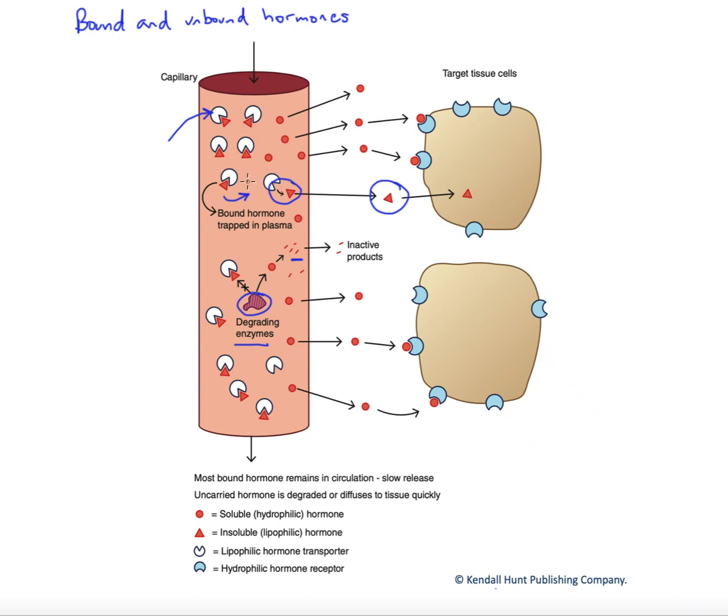One thing to note is that if we get secretion of new hormone, we can overwhelm the amount of the carrier protein such that we get a very dramatic increase in the free component and enhance our response to that particular lipophilic hormone. So we can adjust the responsiveness to lipophilic hormones fairly rapidly by adjusting the free versus bound ratio by adding more hormone and overwhelming the numbers of the protective carrier proteins.